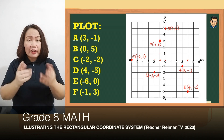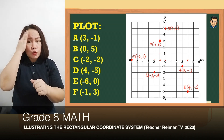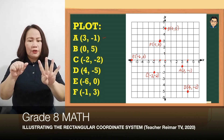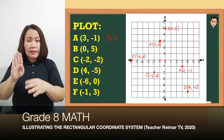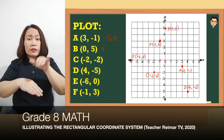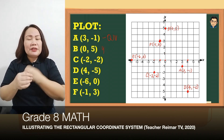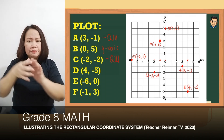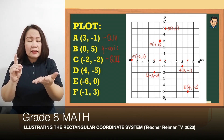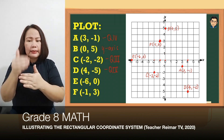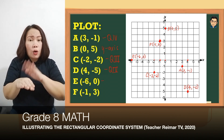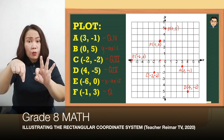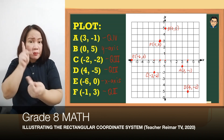After po natin malocate yung mga points, pwede na po nating i-determine kung anong quadrants sila nabibilang. Yung letter A po ay nasa quadrant 4. Yung B ay nasa y-axis. Yung C (-2, -2) ay nasa quadrant 3. Yung D (4, -5) ay nasa quadrant 4 ulit. Yung E (-6, 0) ay nasa x-axis. At yung F (-1, 3) ay nasa quadrant 2. Ganyan lang po yung tamang pagplot ng points sa coordinate plane.